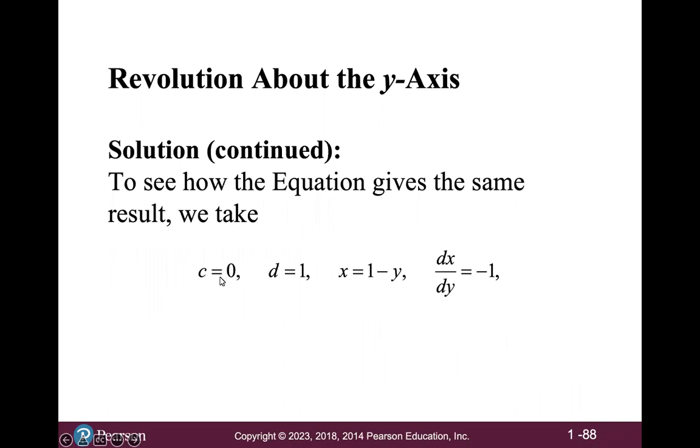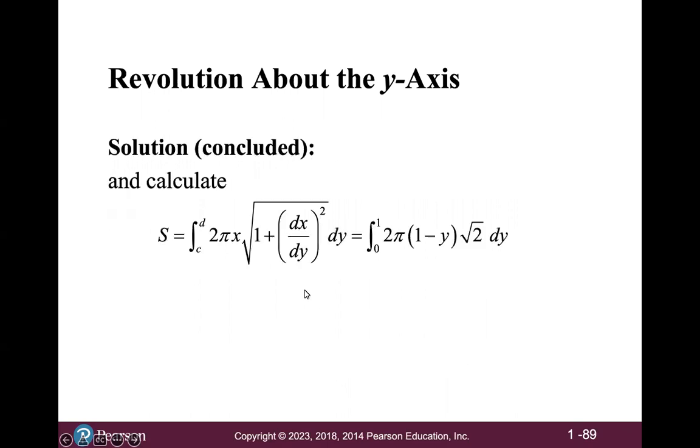So with c equal to 0 and d equal to 1, x equals 1 minus y. Of course, dxdy is equal to negative 1. The derivative of 1 minus y is just negative 1. We get that the square root of 1 plus dxdy squared just comes out to the square root of 2. So then we have the integral from c to d of 2 pi times x, which remember is 1 minus y, times this thing, which came out to the square root of 2. So that's how you get this integral.